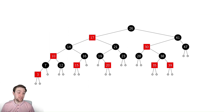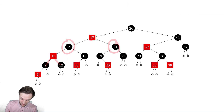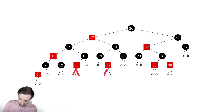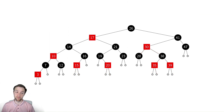Now we need to check: does every single red child have both of its children being black? Here's a red one — both of its children are black. Red node with two black children. Red node — the leaves are black, so that's fine. Same thing here, that's a leaf. That property seems to be okay.